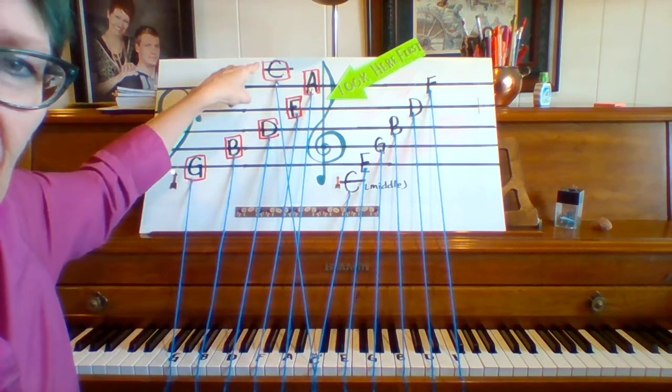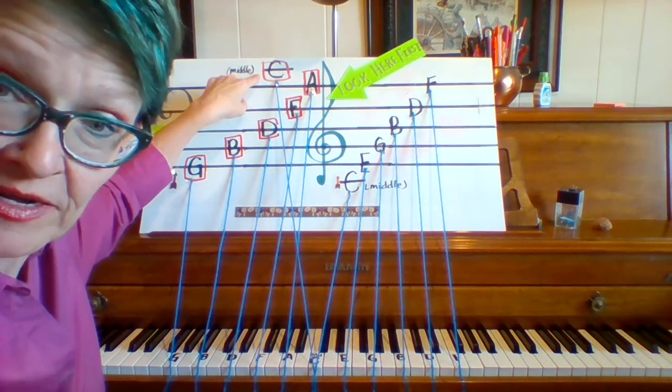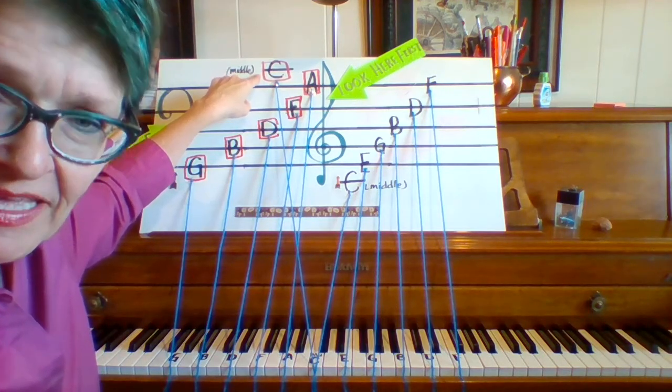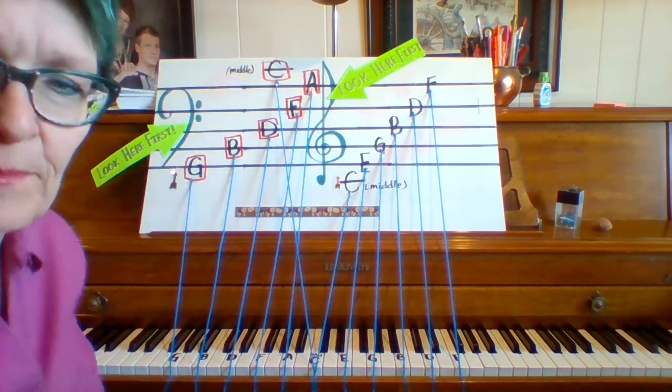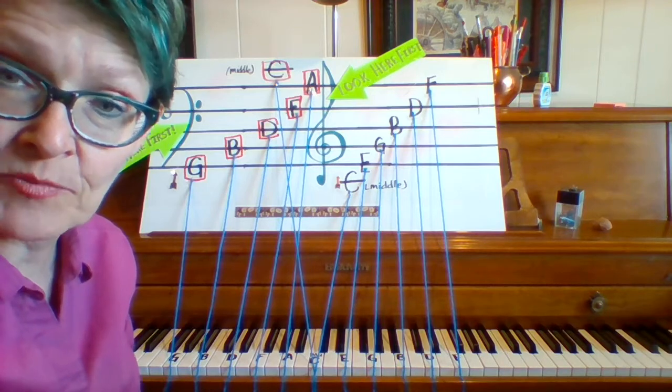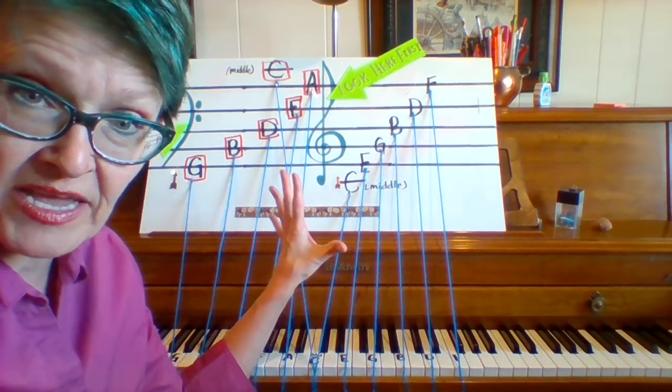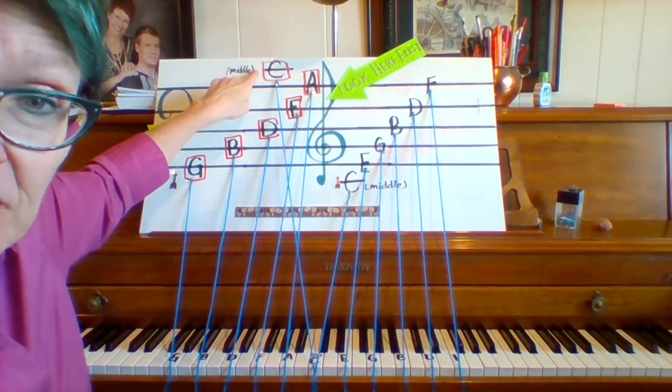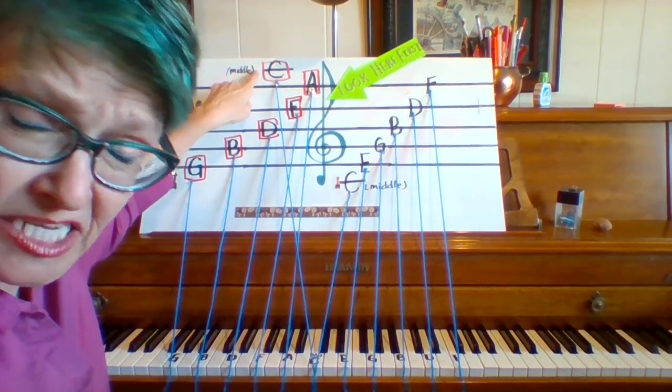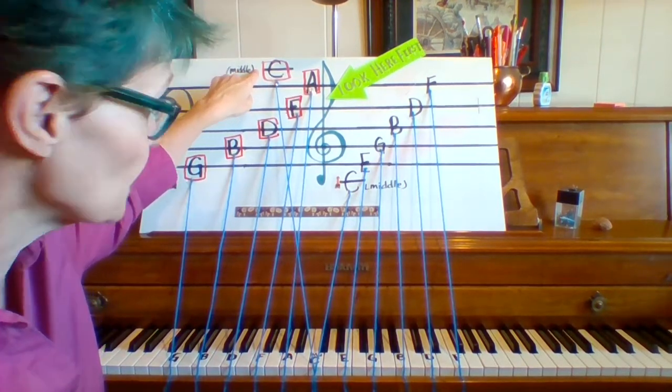Now, this top note, you may be wondering, there was a question about it in our last quiz. It is middle C, as it is written for the bass clef. Middle C can be written both for the bass clef, which would assume that our left hand would be playing it. If it's written for the bass clef, it's up above. It's still on its own little line, but it's up above. Okay. Still middle C.